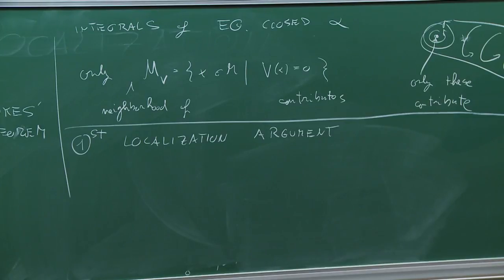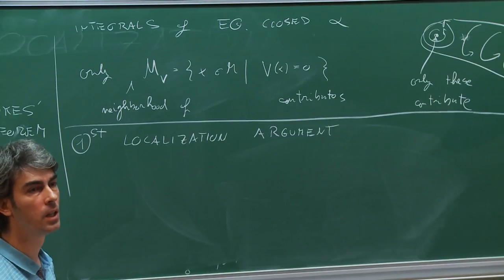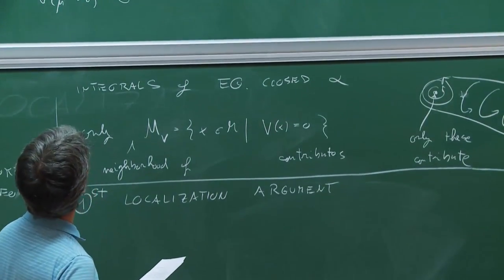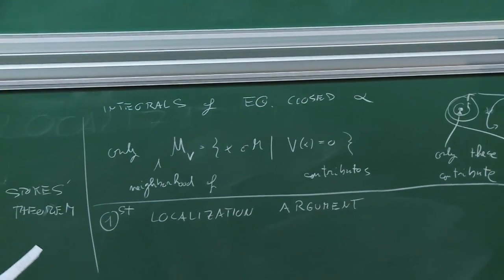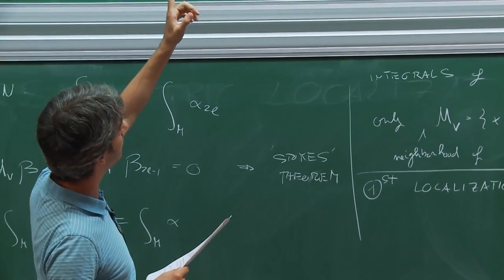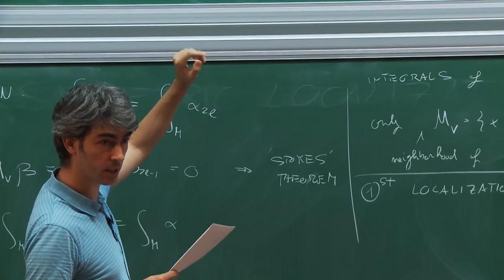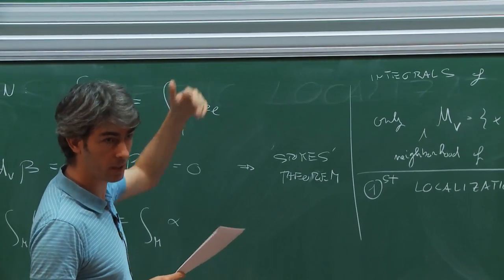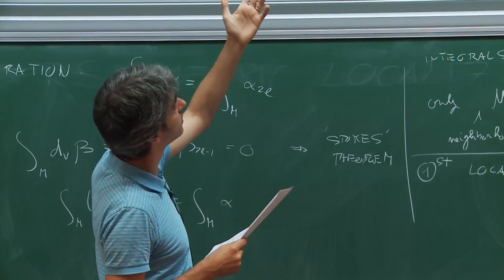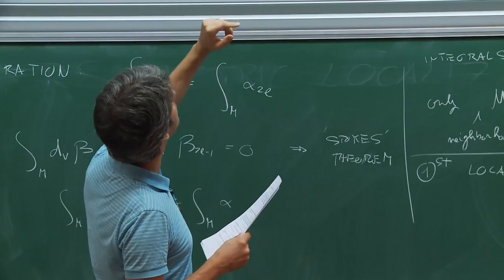A question was raised: how does this definition of equivariant cohomology solve the problem with fixed points? If G does not act with fixed points, M mod G is a smooth manifold and we can define its cohomology. But if G has fixed points, M mod G is not a smooth manifold. Equivariant cohomology generalizes the concept of cohomology of the quotient space to the case in which the quotient space is not smooth — it is defined even when G has fixed points.